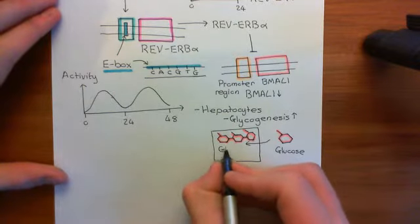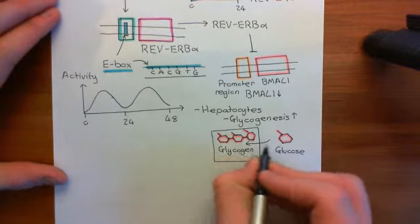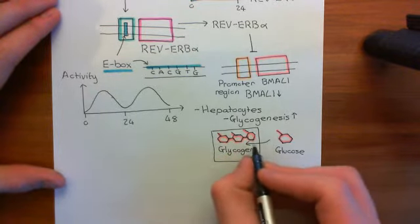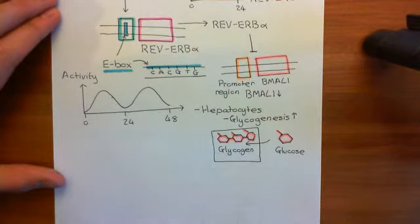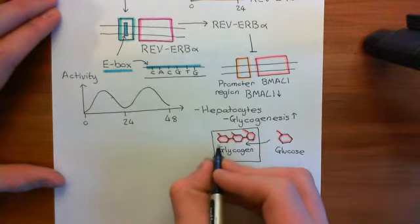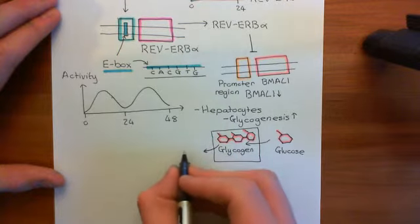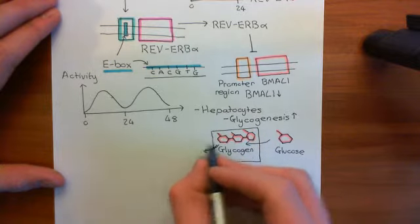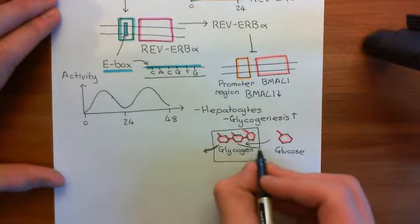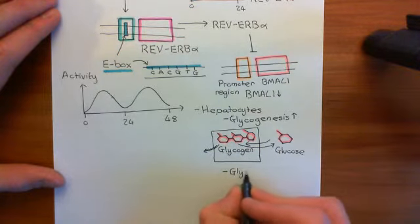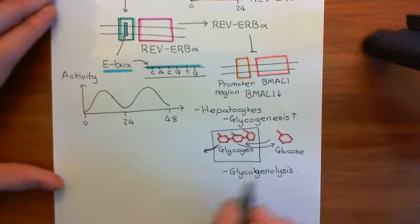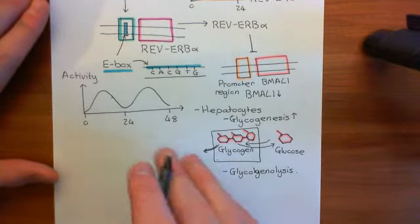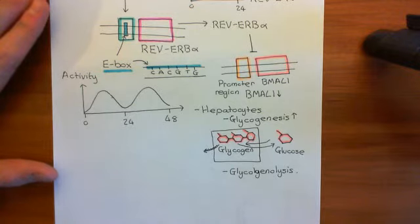According to their internal clock, hepatocytes will decide whether they need to be synthesising glycogen or breaking glycogen down. In the daytime, they know that you're going to feed, so they'll be taking glucose out of the blood and synthesising glycogen. Whereas in the night time, they know that you're not likely to be feeding, so during the night time they will break down glycogen back into glucose and release it into the blood. This is called glycogenolysis. So hepatocytes change their activity based on their circadian clock, and this acts as a feed-forward mechanism by which they are predicting likely changes in blood glucose.